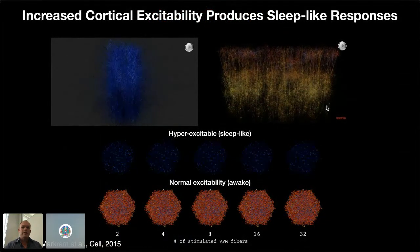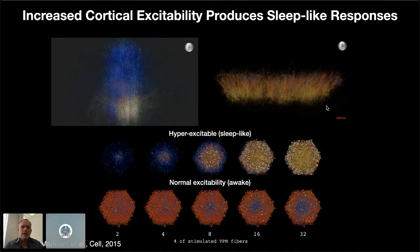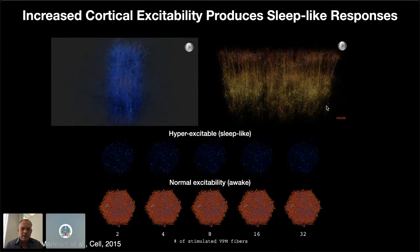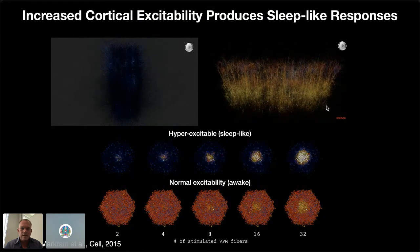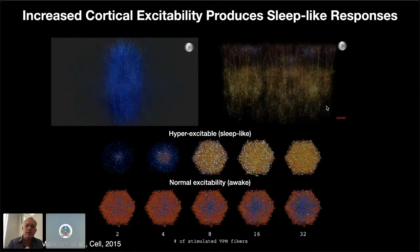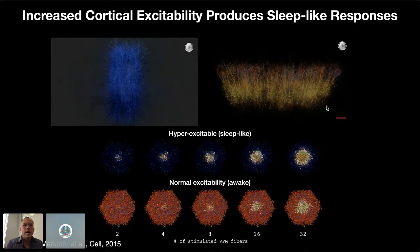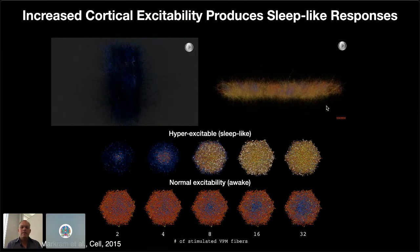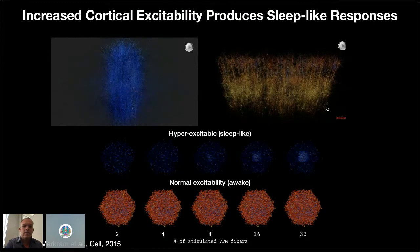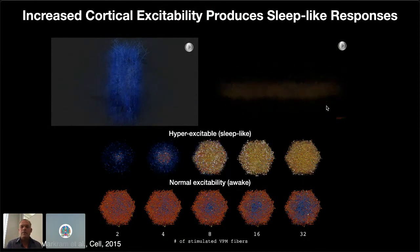This change in excitability — essentially manipulating the relative ratio between excitation and inhibition — can create a hyper-excitable sleep-like response. When we reduce the calcium level, we can bring it to a normal excitability, as in the awake state, and it really resembles wakefulness-like responses to stimuli. The x-axis shows different levels of thalamic input to the cortex in the model — in the sleep-like condition, once you get to eight stimulated fibers, you trigger this widespread all-or-nothing response, whereas at normal excitability you get a very proportional response to the input.